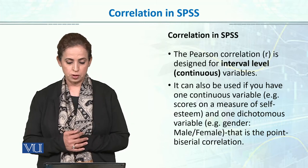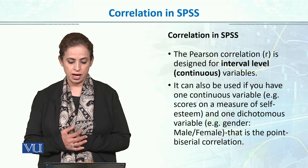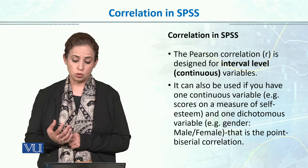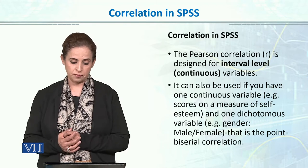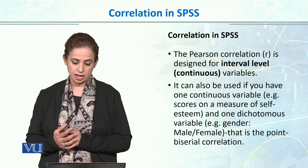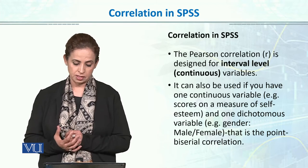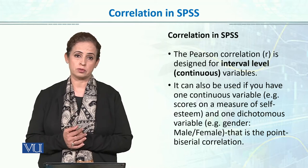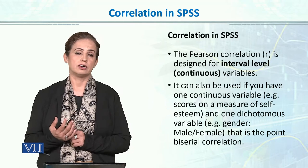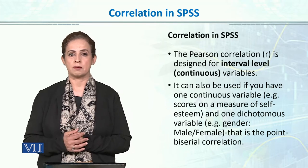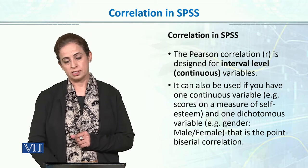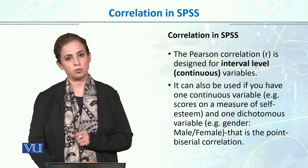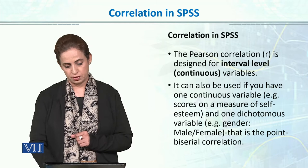It can also be used if you have one continuous variable — for example, scores on a measure of self-esteem — and one dichotomous variable, that is gender. So if we have one continuous variable and our other variable is dichotomous, such as gender with male or female categorization, we can still run the correlation.